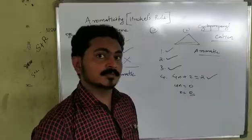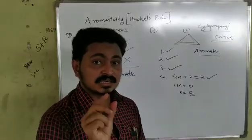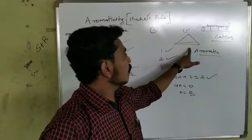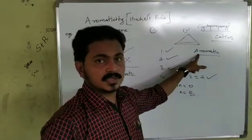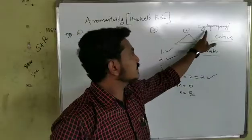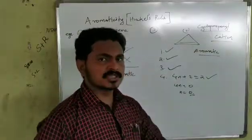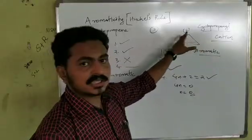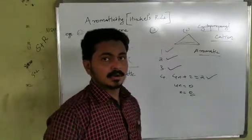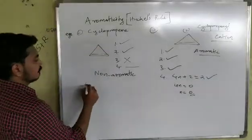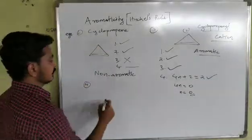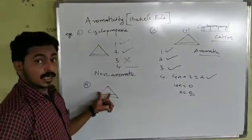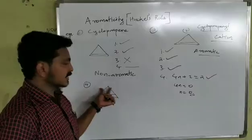If you are asked for the smallest aromatic compound, the answer is the cyclopropenyl cation. This is the smallest known aromatic compound according to Huckel's Rule.